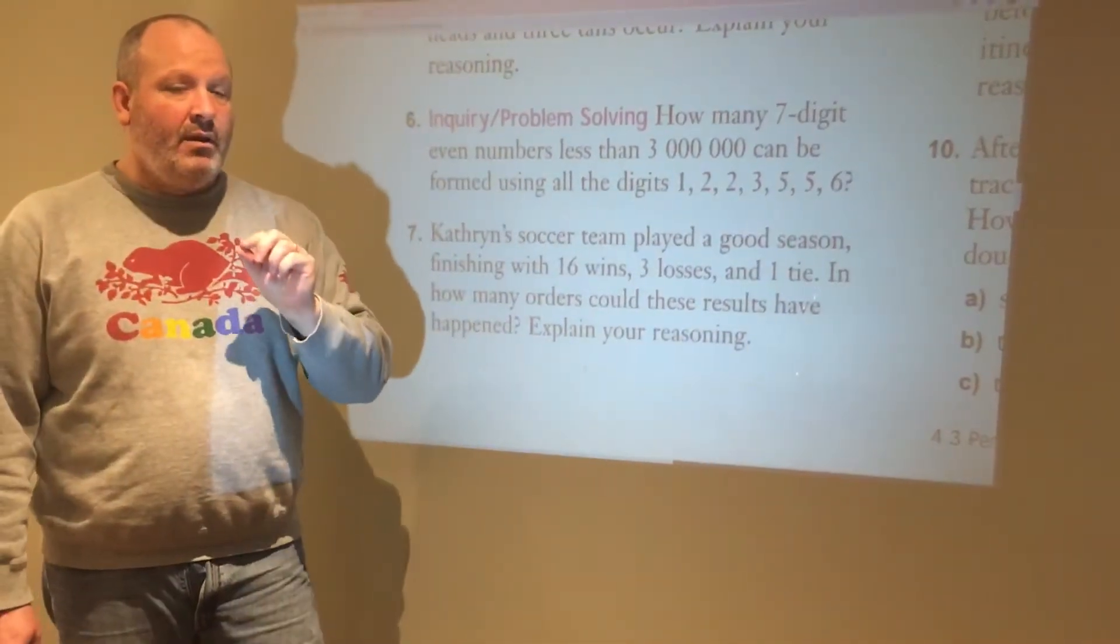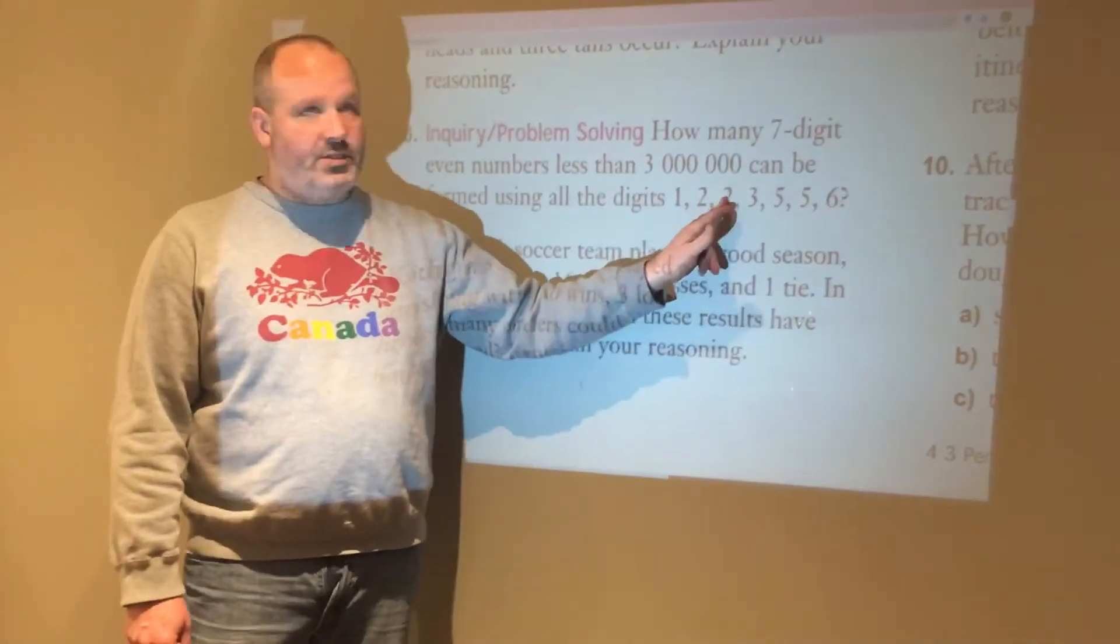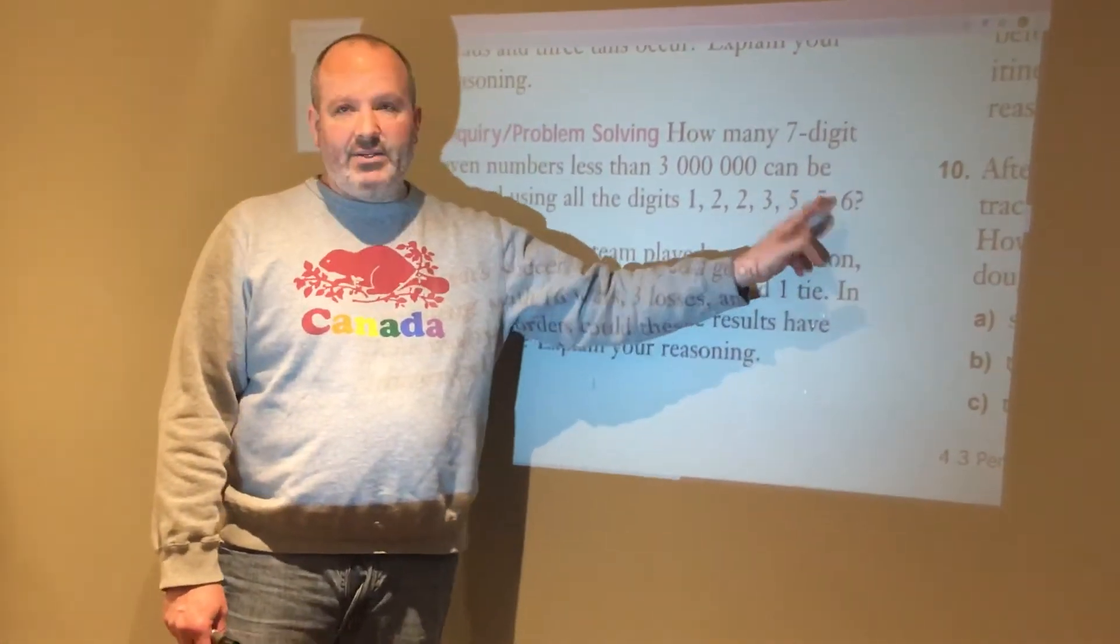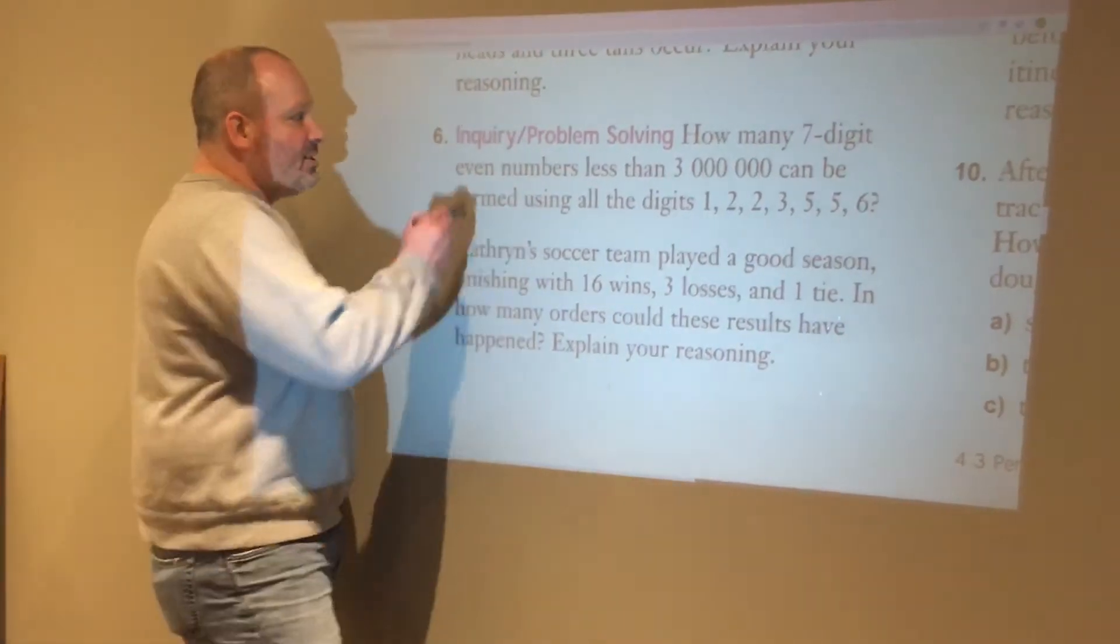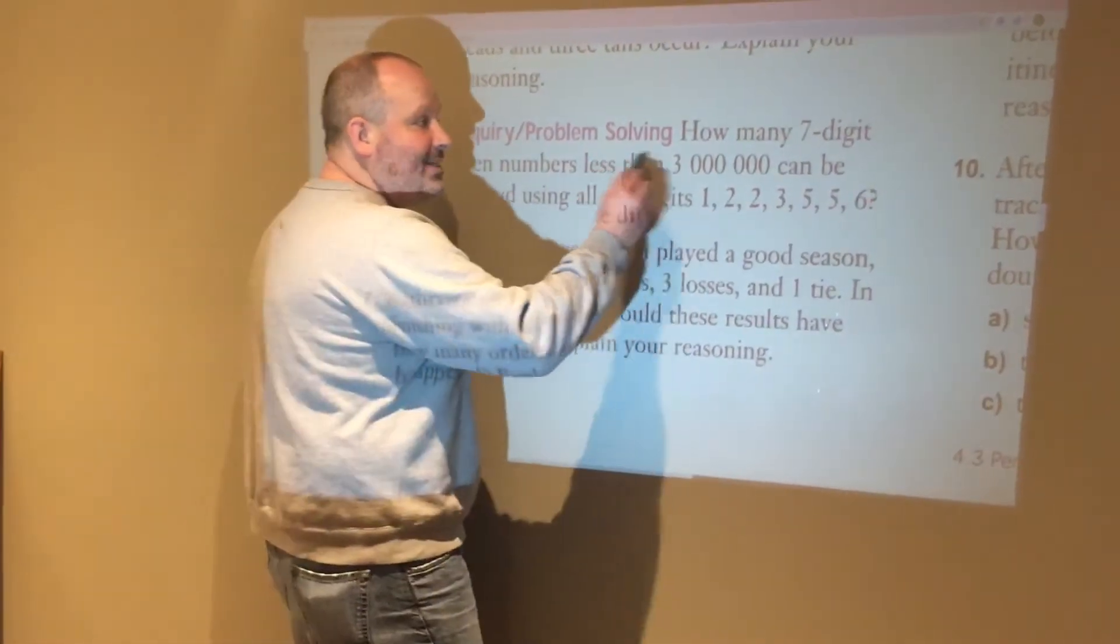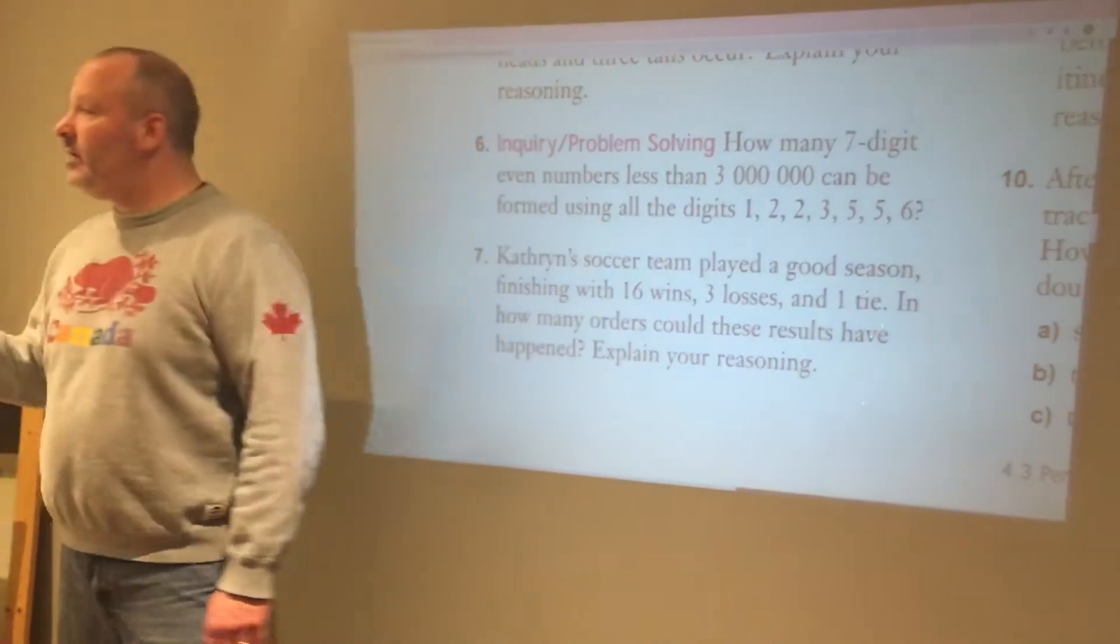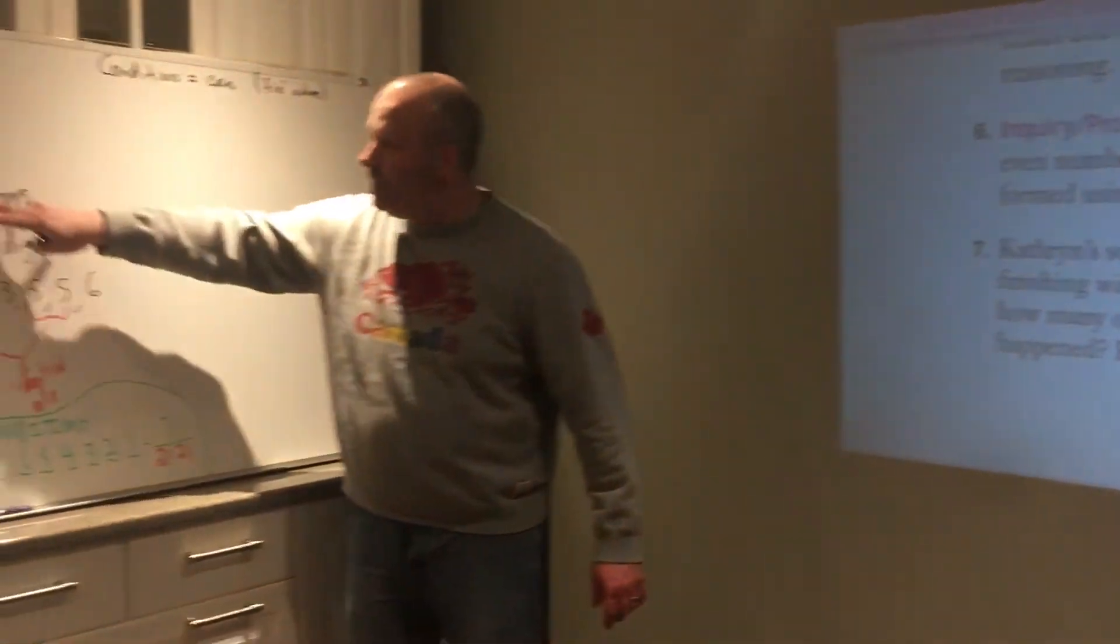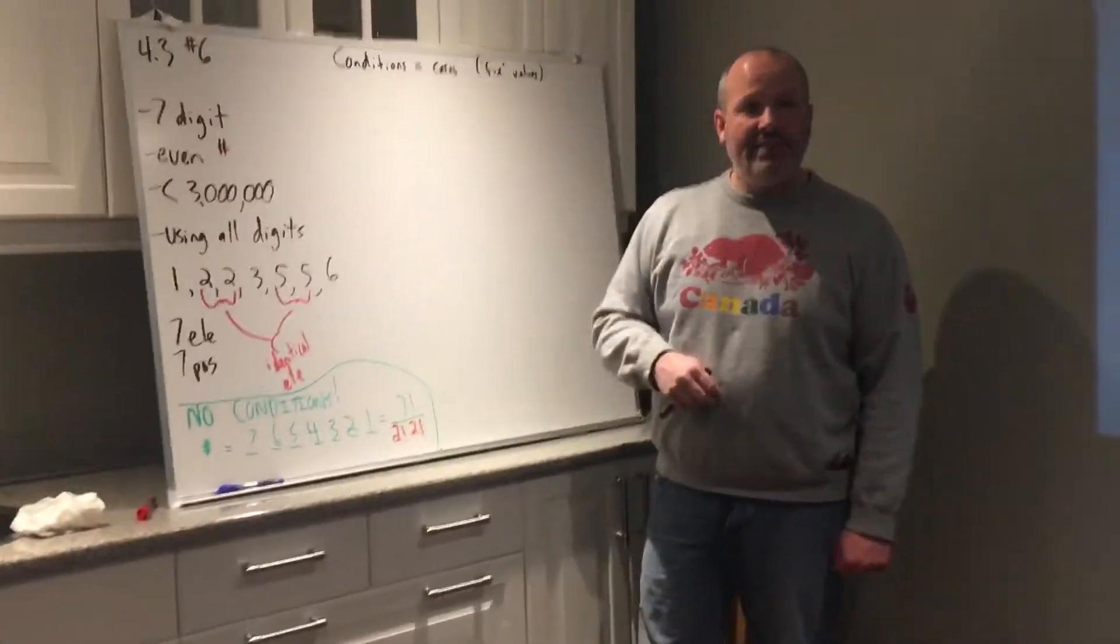So in section 4.3, we have identical elements where we lose variability because this two and this two are exactly the same, and this five and this five are exactly the same. But we also have some extra conditions: even numbers and less than 3 million. So we have to do a bunch of different cases.